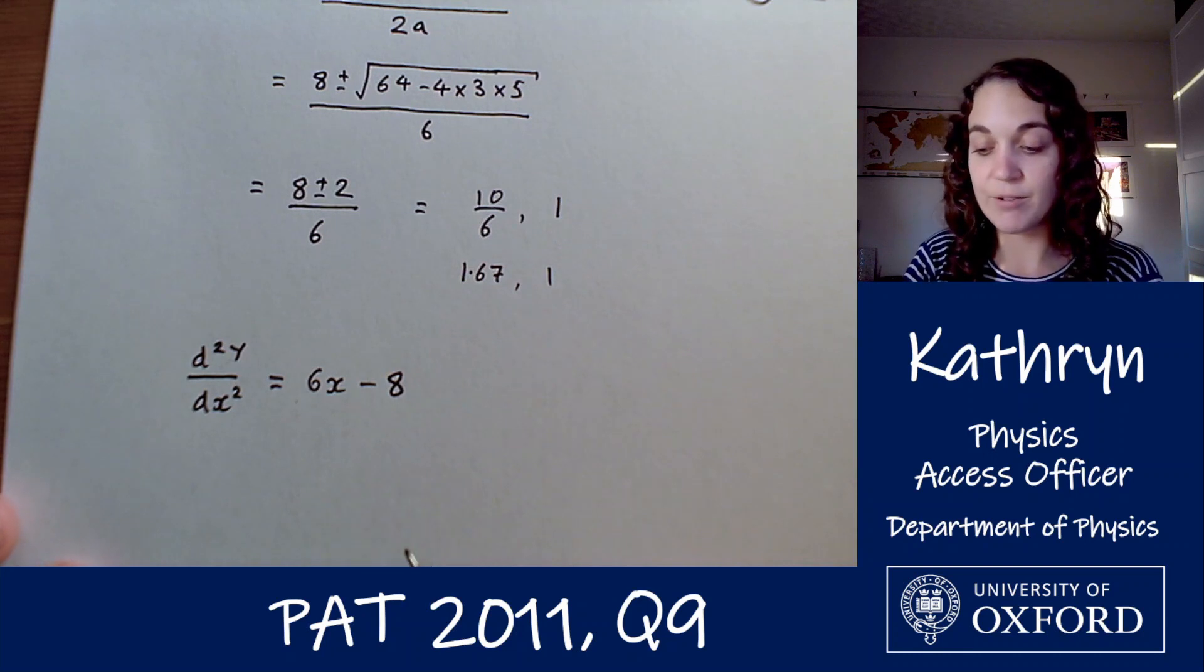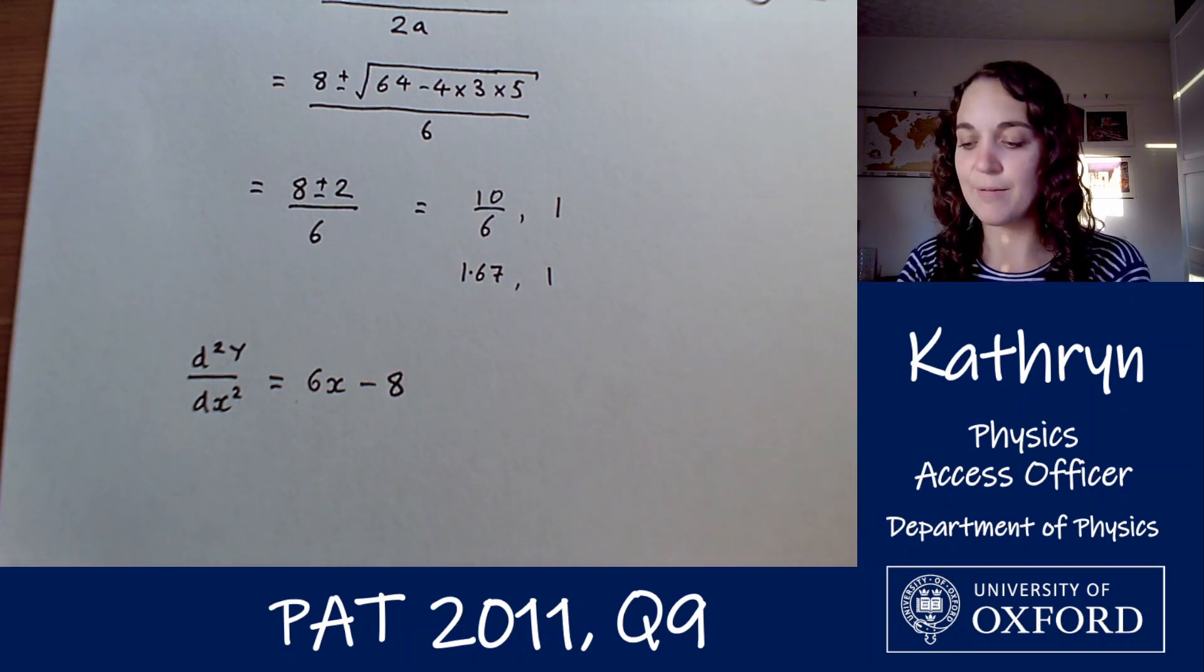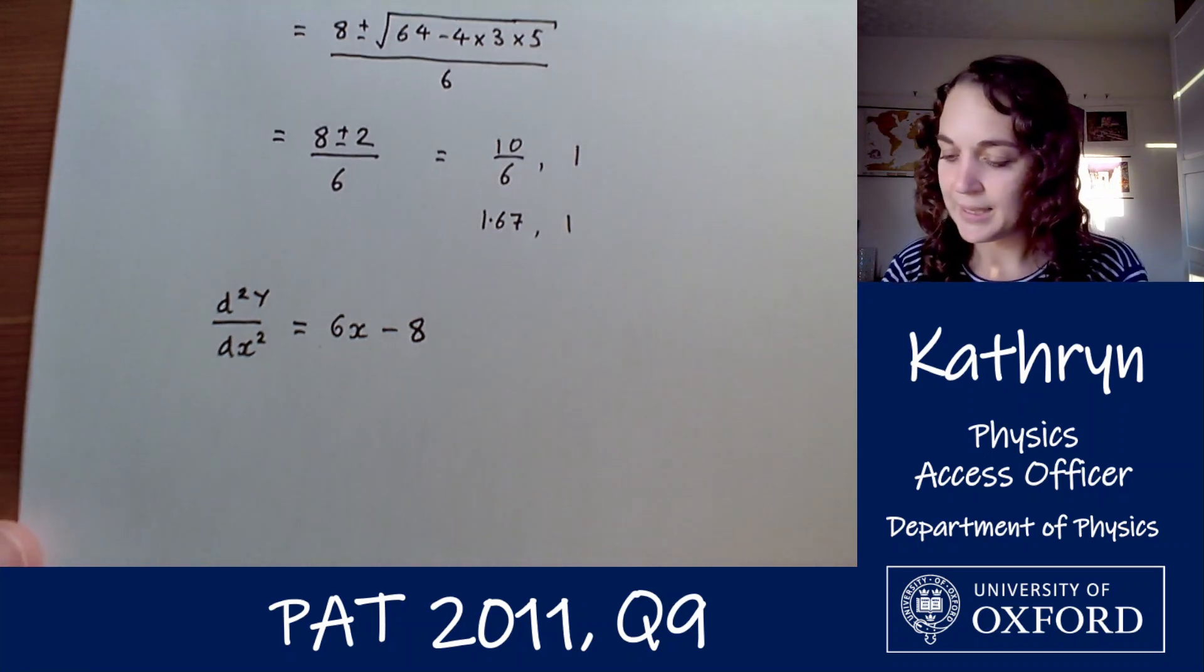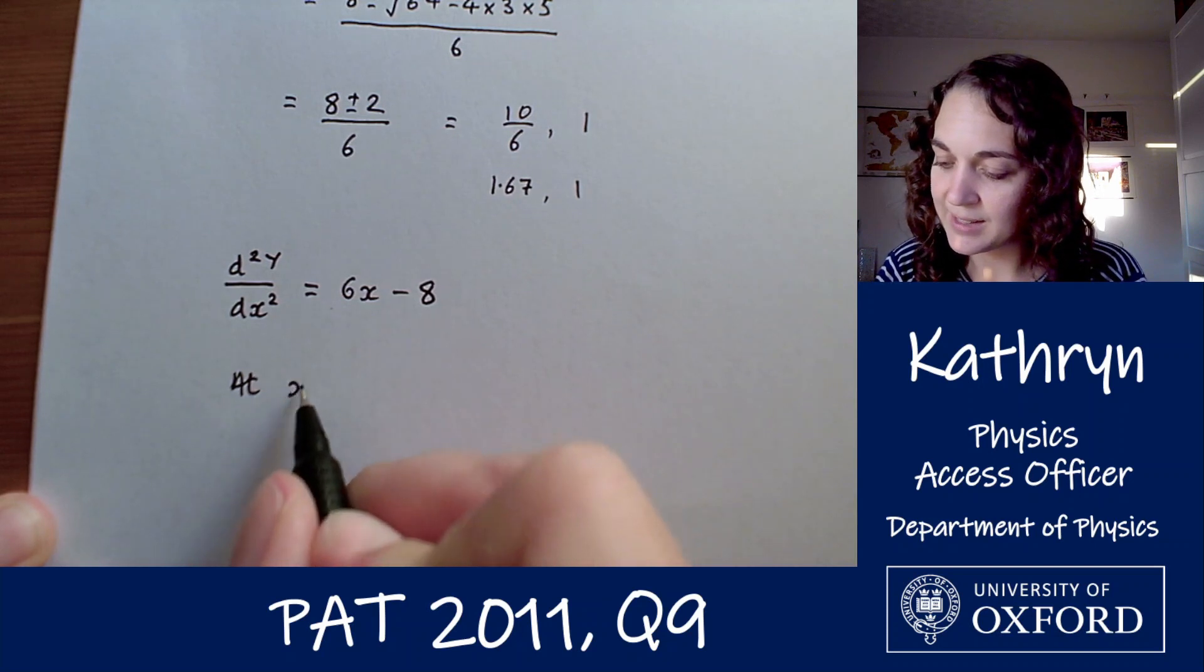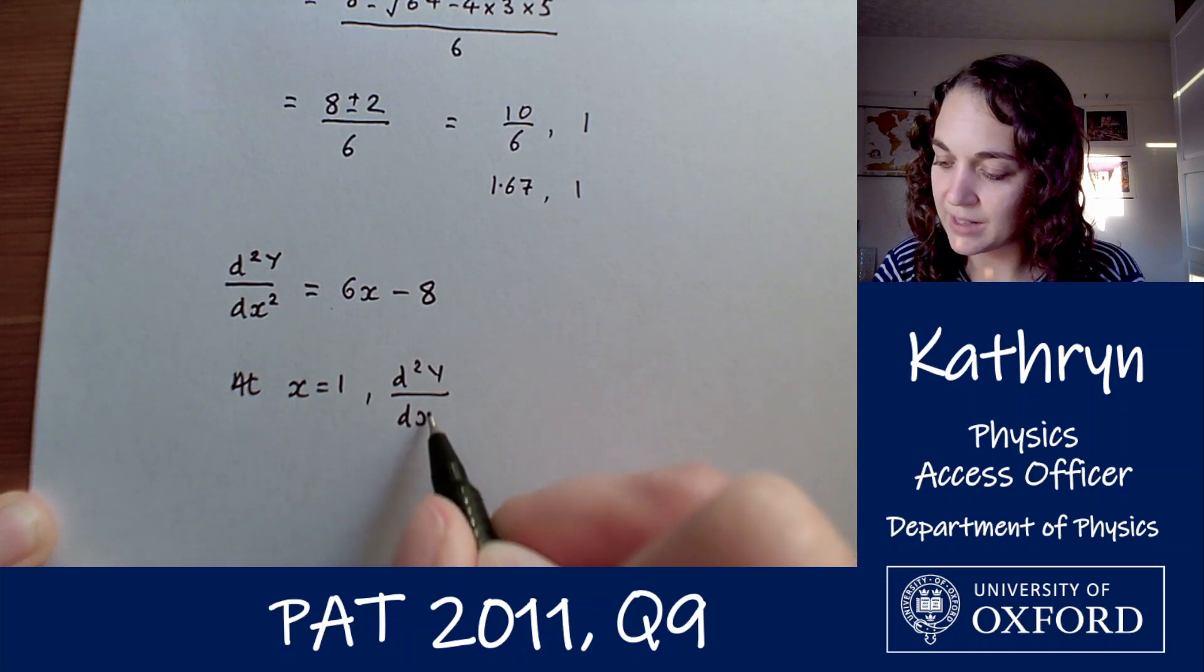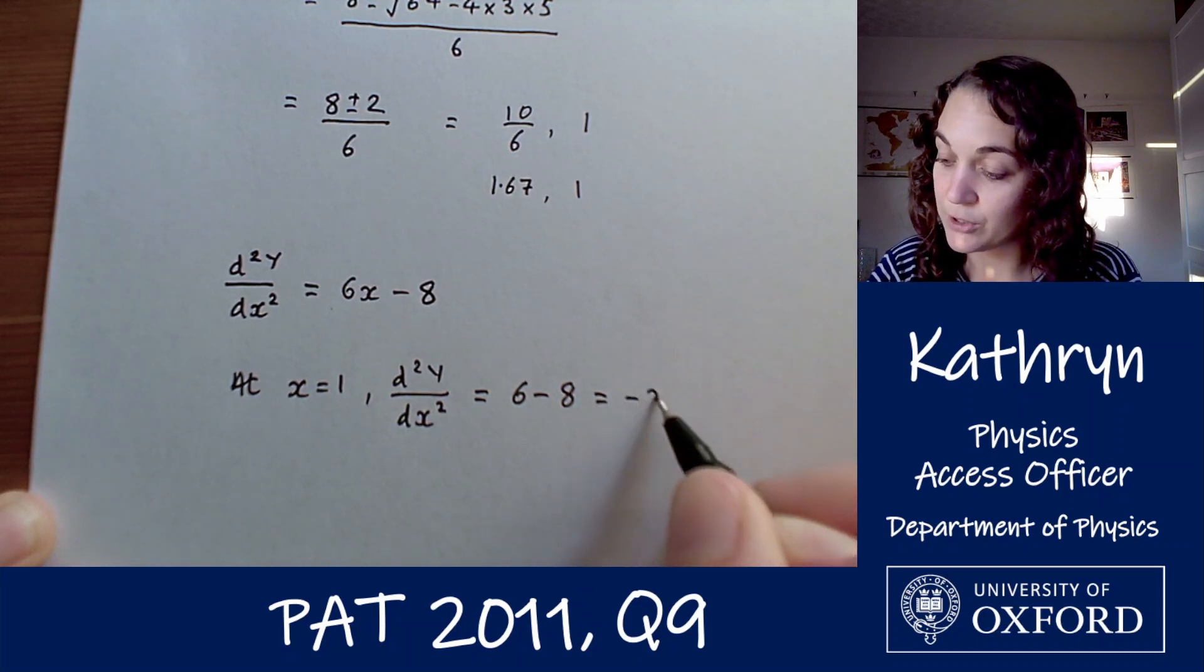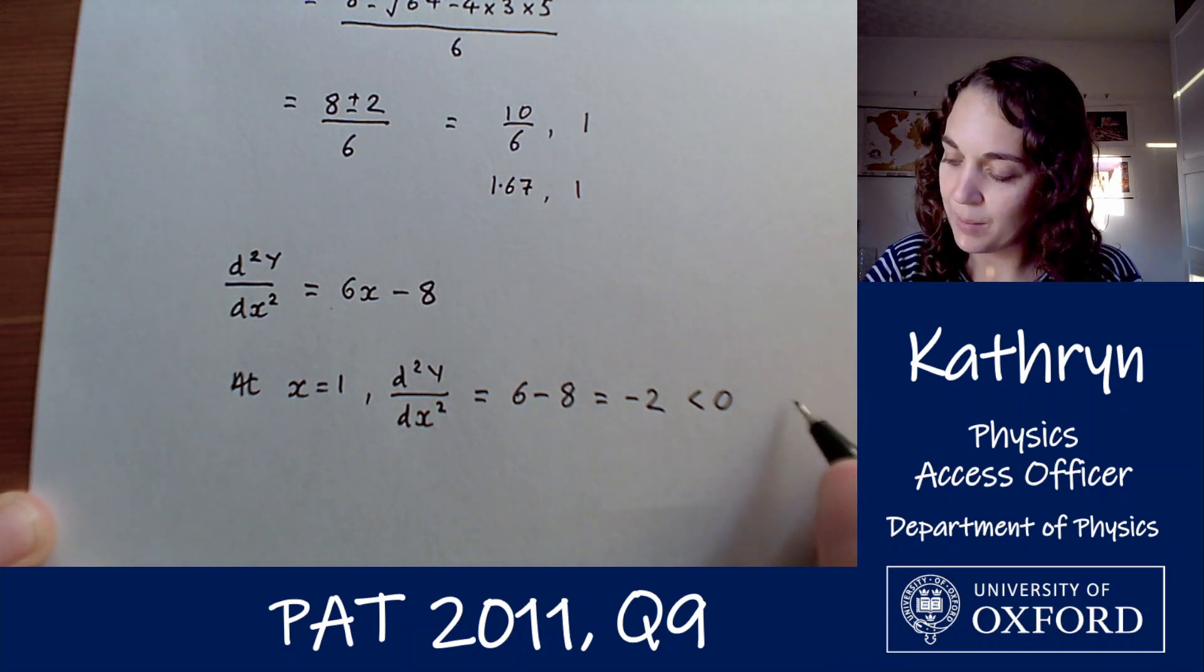And then what we want to do is substitute these two values into our second derivative, and if our second derivative comes out negative then we must have a maximum. So at x equals 1, d2Y by dx squared equals 6 minus 8 which is minus 2, which is less than 0. So that must be a maximum.